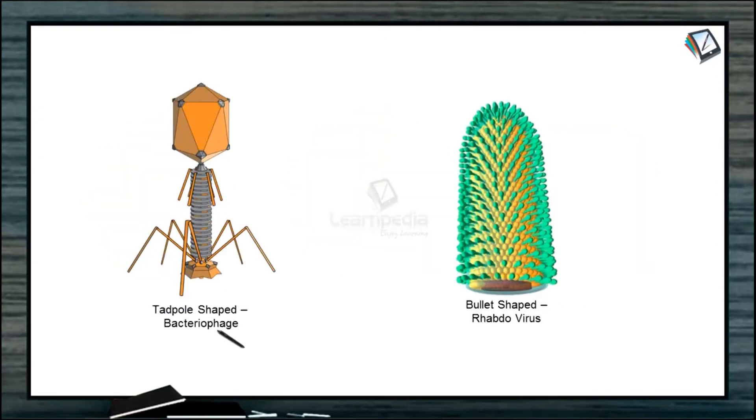Here is the bacteriophage which is tadpole shaped, means it has a head, a tail, and at the end of the tail it has a tail plate which is hexagonal with attached tail fibers. This virus has bullet shape. Example: rhabdovirus.